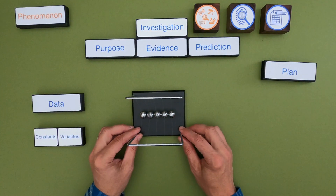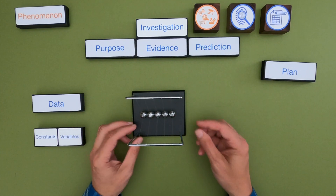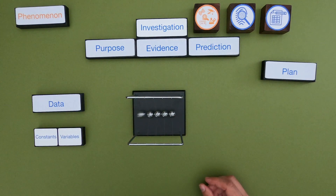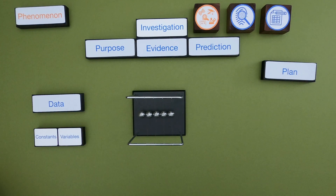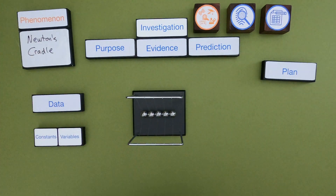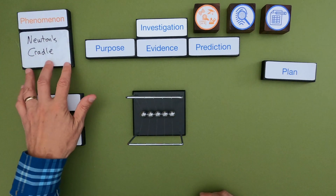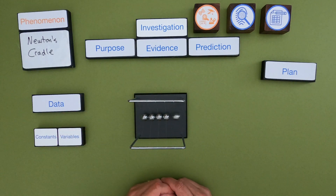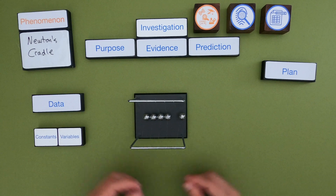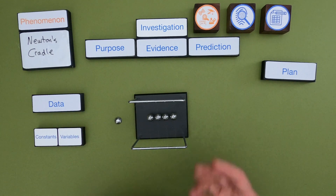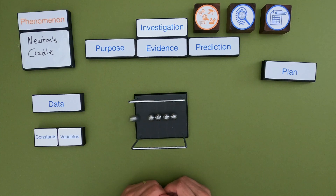As we start to think about investigating, you always want to start with some phenomena. A really easy way to get started is with a Newton's cradle — I'm sure everybody's seen these on a desk before. Once you've identified a phenomena, you just want to play around with it and start thinking about what questions you could answer. One thing I've always been interested in is how long does it go, and what might contribute to how long it goes.